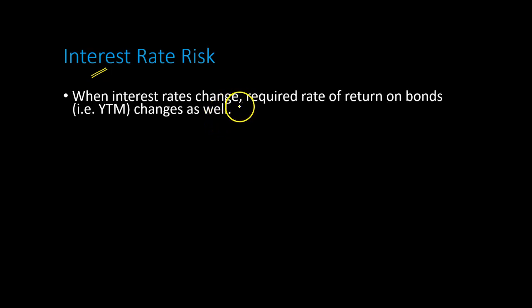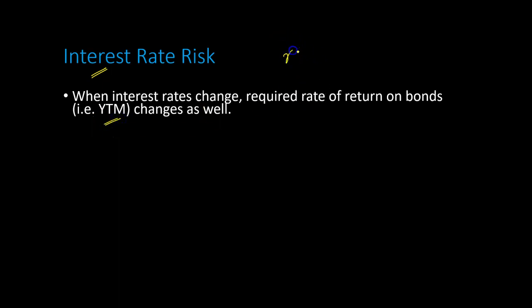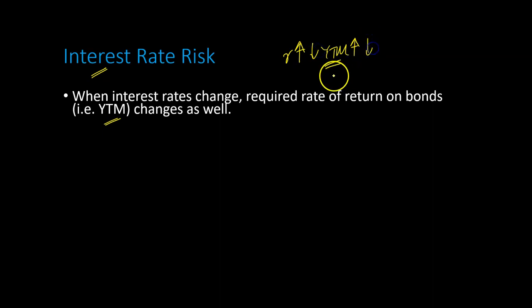So here is the main idea. When interest rates change, it changes the rate of return that bondholders can expect to earn on bonds. In other words, it causes a change in the yield to maturity. Very loosely speaking, as interest rates go up, the yield to maturity on bonds — the rate of return that investors can expect to earn — goes up as well, and vice versa. And so changes in yield to maturity expose bondholders to certain risks.